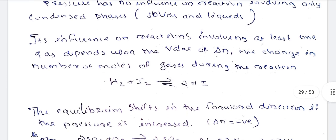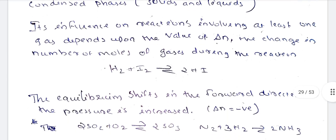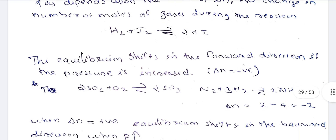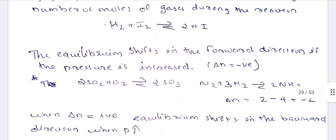The delta N value determines the effect. The equilibrium changes in the forward direction if the pressure is increased — that is, if I increase the pressure, the forward reaction is favored and more product will be formed. This applies when delta N is negative. If delta N is positive, the pressure decrease favors the forward reaction.